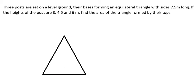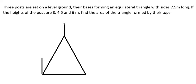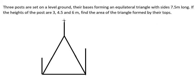We know that three parts create an equilateral triangle. The height of each post is different — the heights are number three, four-point-five, and number six. They want us to find the area of the triangle at the top.